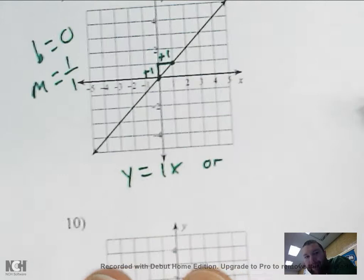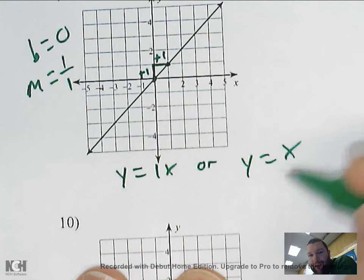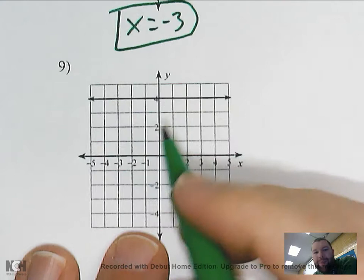My equation would be y equals one x, or better: y equals x. Any time you have one times a number it's just that number, so y equals x is your equation.